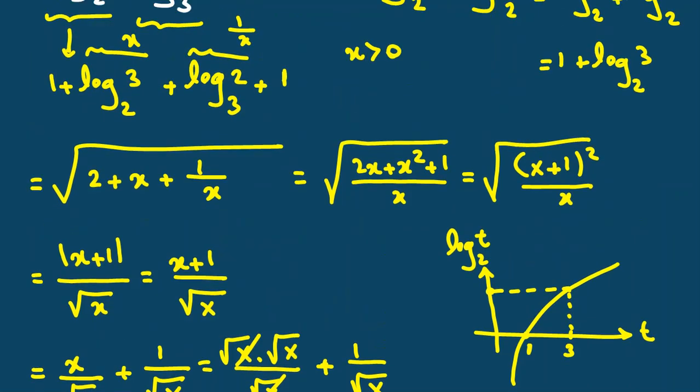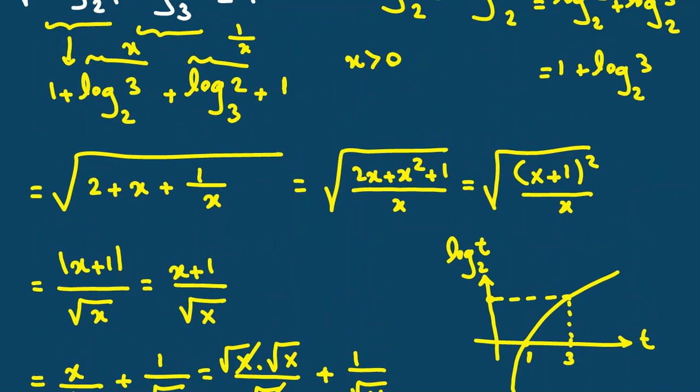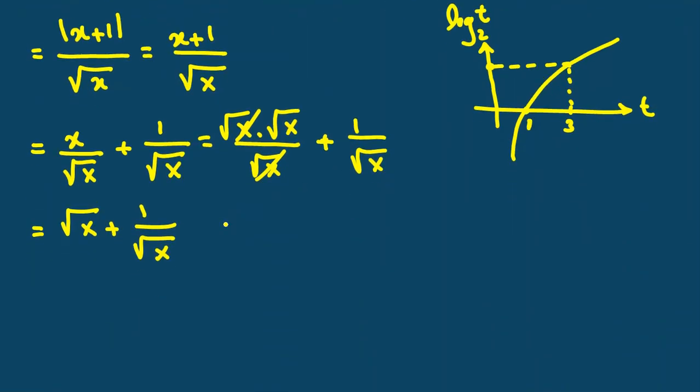Now, we replace X with log base 2 of 3. It will be square root of log base 2 of 3 plus 1 over square root of log base 2 of 3.